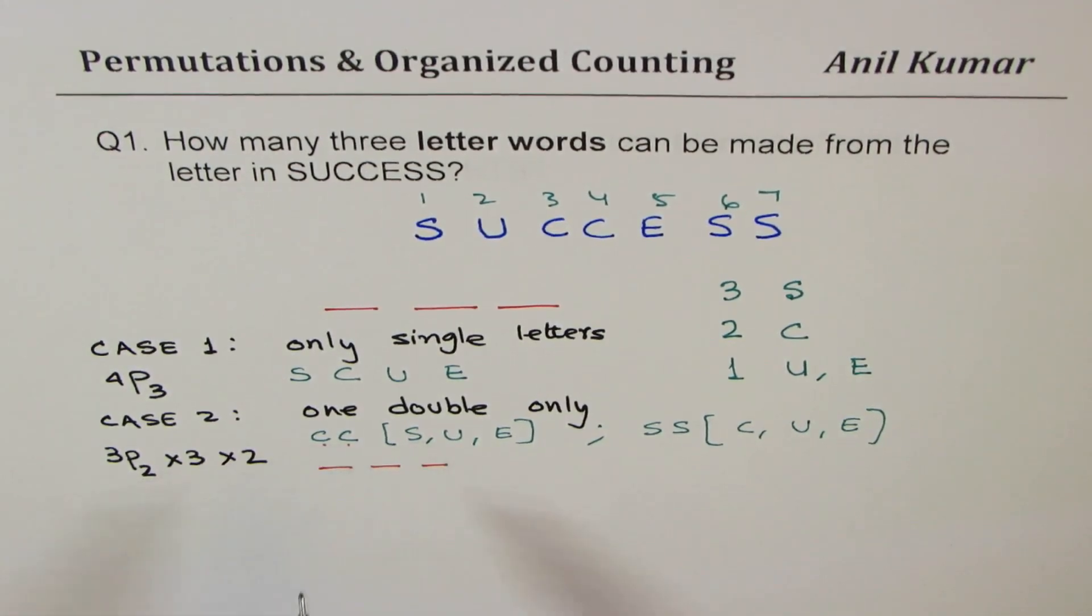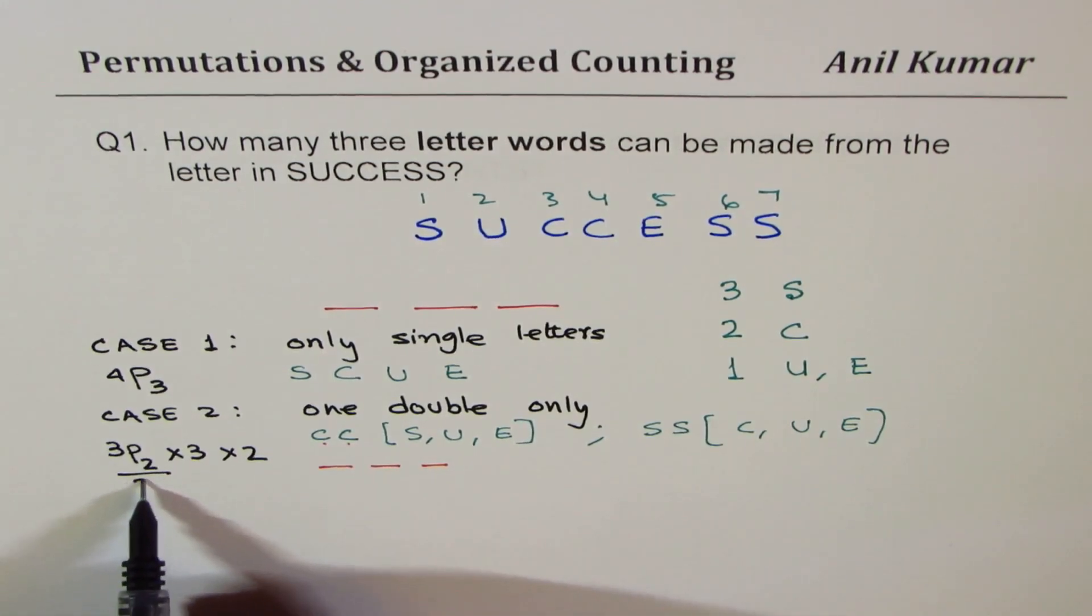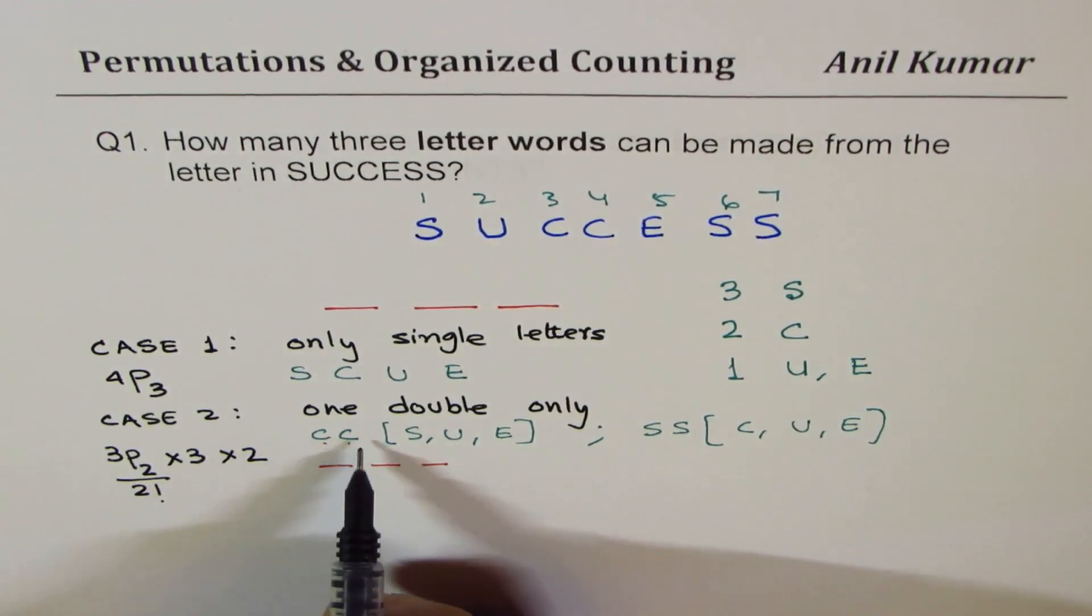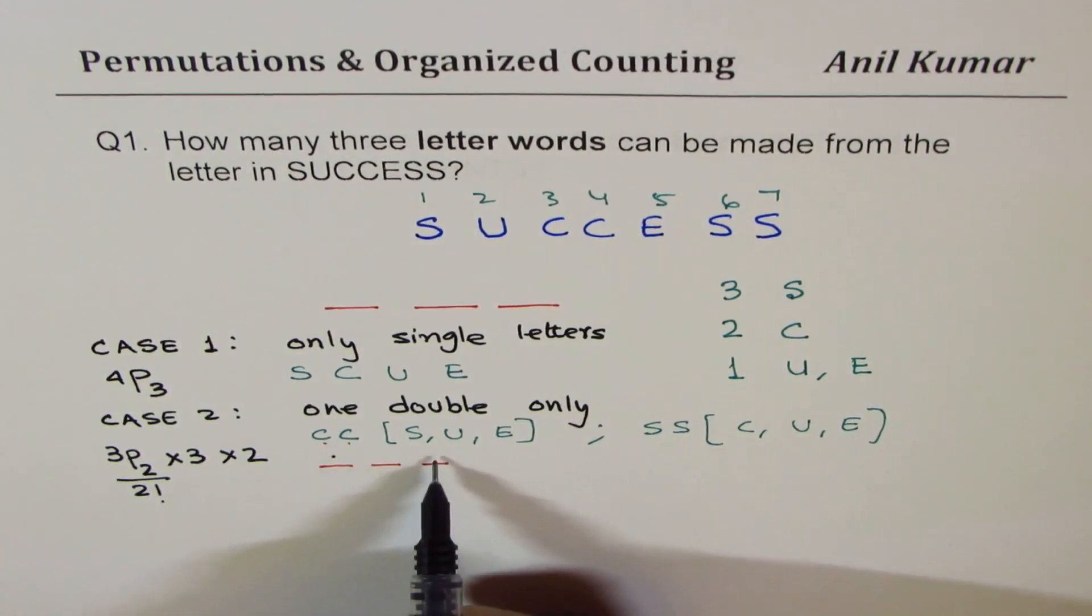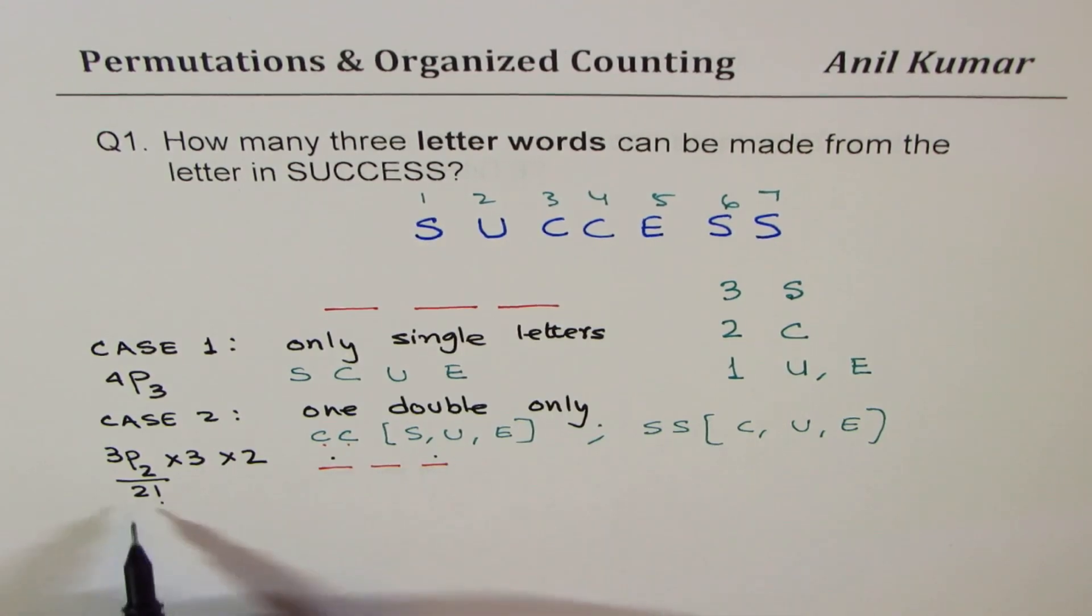Correct. So you get the idea: first we will fill up these two C's, we have 3P2. Now I forgot to write divided by 2 factorial, since they are not distinguished—a C here and C there and their reverse will just give me one combination, so we have to divide by 2 factorial. Got it, right?